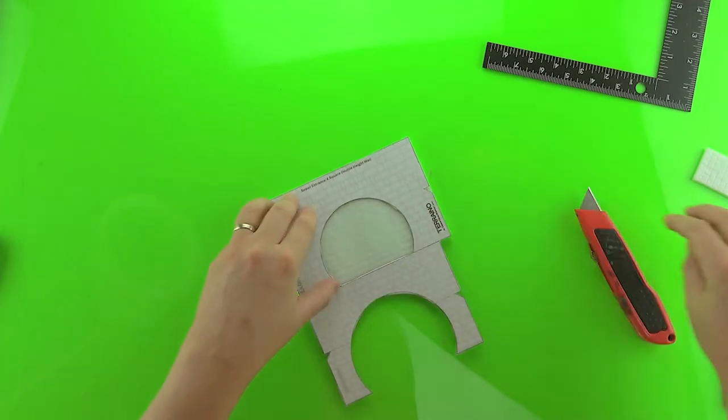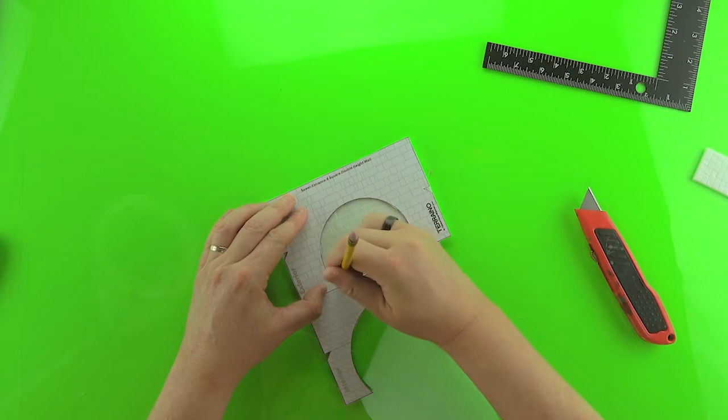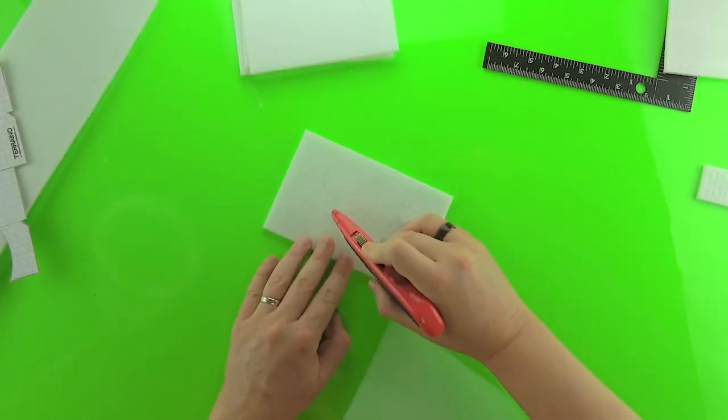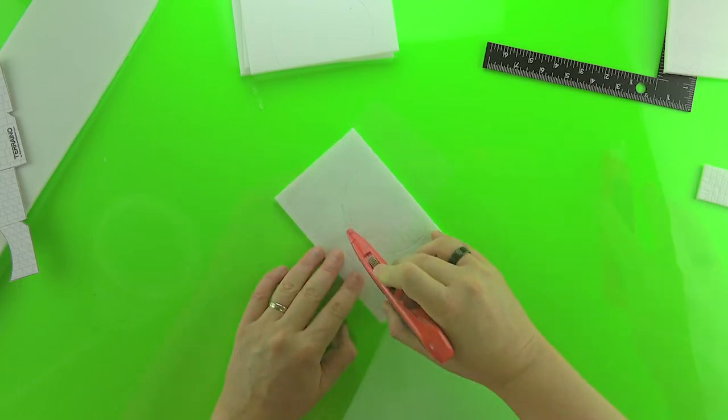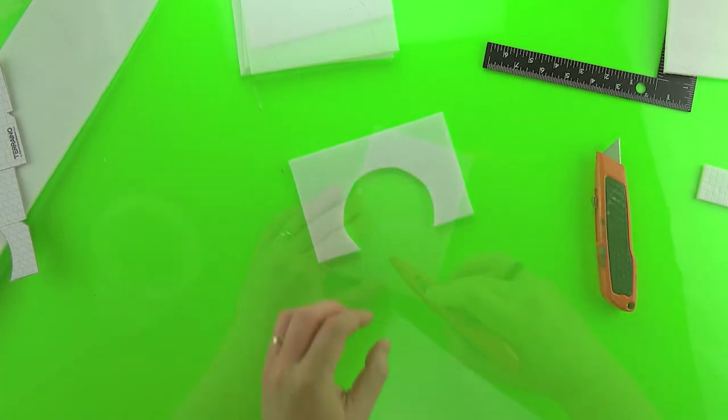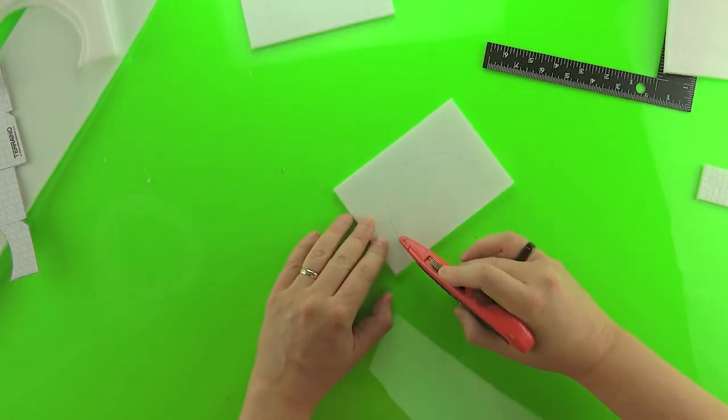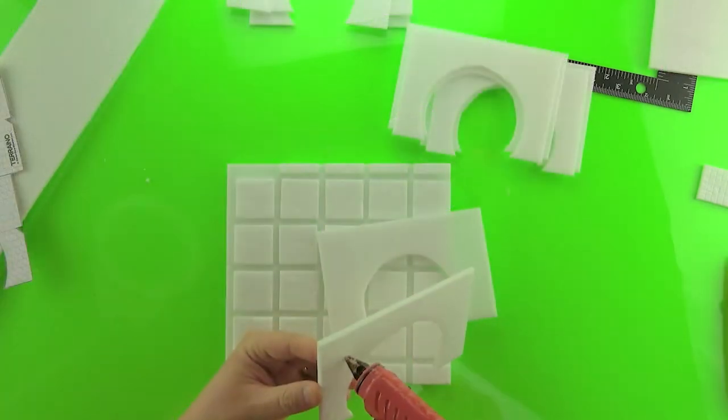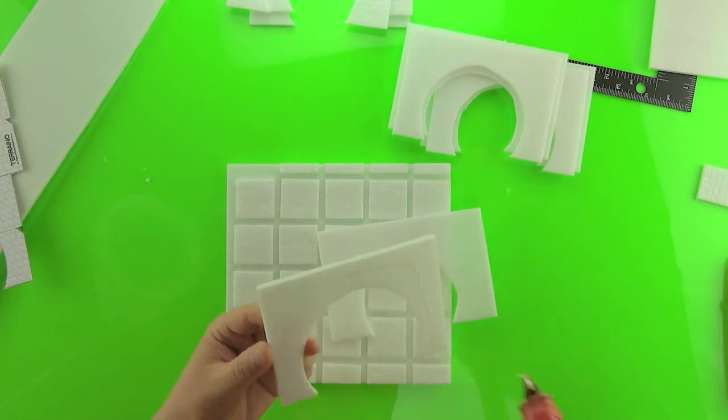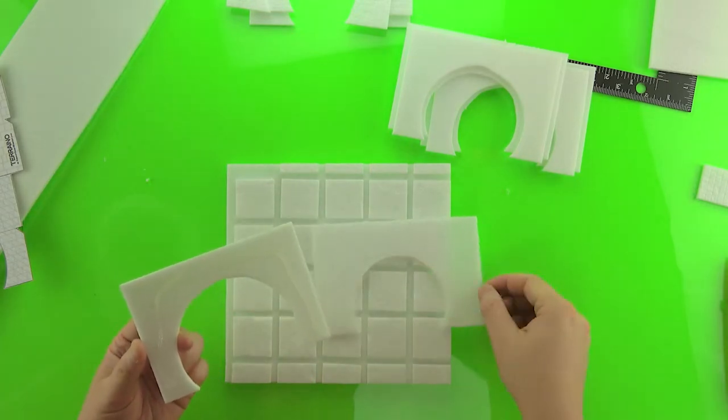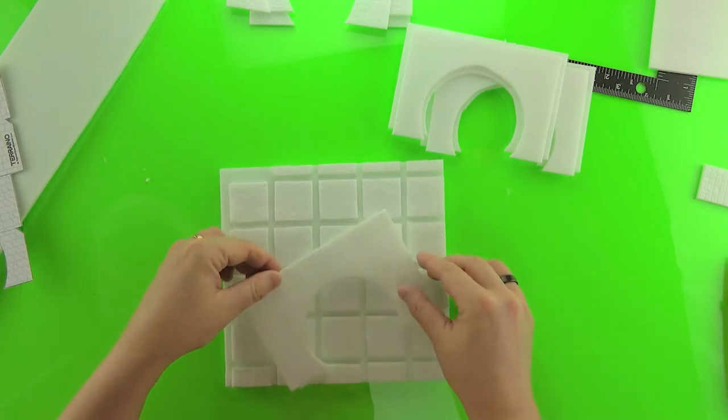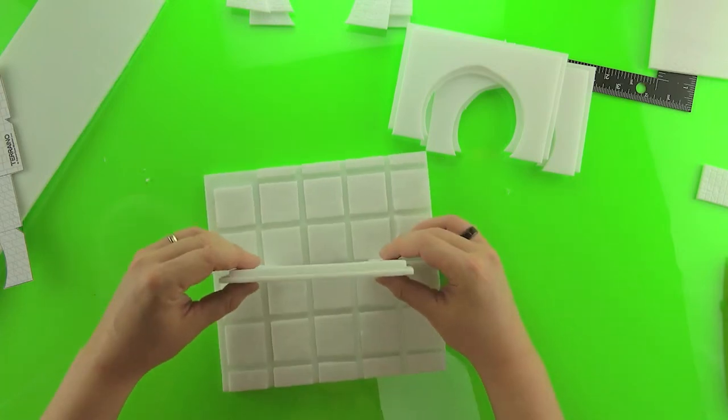You're going to need two exterior pieces that are pre-textured and then just cut out that middle bit there. Now one difference with this is we're not going to assemble the wall the entire way before we paint it. We're only going to put the interior tongue piece onto one of the exterior pieces of the wall and then we're going to paint them. Why? Well, if we didn't do that we wouldn't be able to put the grating in after we painted it.